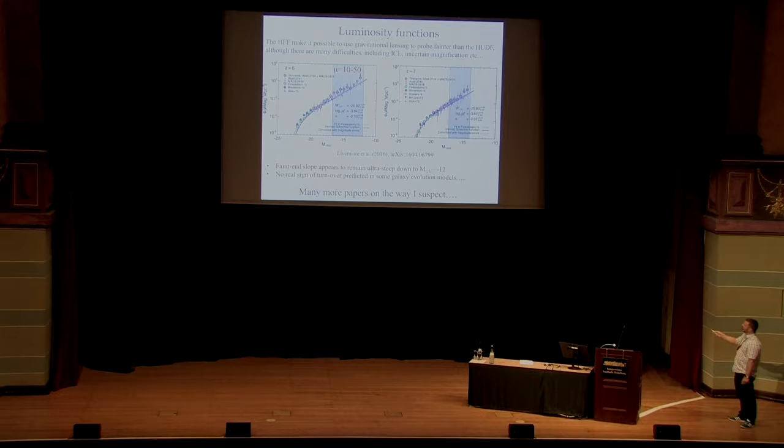A lot of galaxy evolution models would predict that the luminosity function would have turned over by this point. Can't see it so far. And the faint end slope is still very steep at about minus two, which is good news for reionization. The thing to bear in mind is though, to access these data, you've had to go to magnifications in the range of 10 to 50. And there's a lot of uncertainty involved in the different maps in that regime. However, this is one of the first papers, I suspect there'll be many more in the months and years ahead.